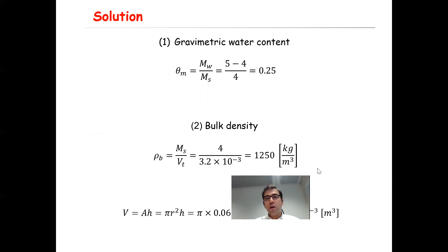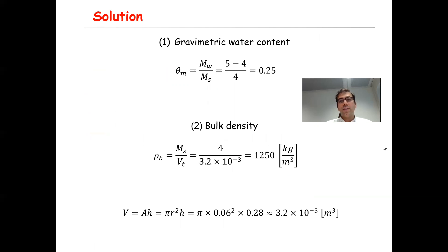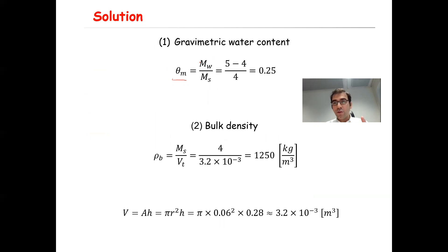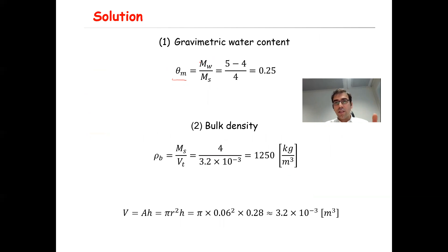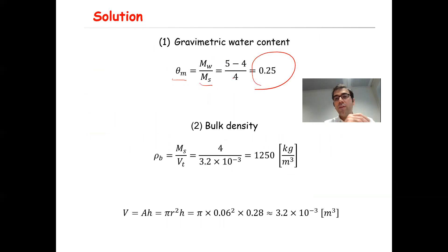Let's solve the first part: gravimetric water content equals Mw divided by Ms. The wet mass was 5 kg and the dry mass was 4 kg, so mass of water is 5 minus 4 equals 1 kg, divided by Ms which is 4. That gives 1 divided by 4, which is 0.25 or 25 percent. That is the gravimetric water content.